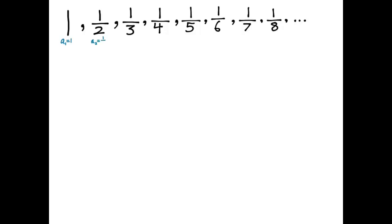And we can name the terms a sub 1, a sub 2, and so on according to the usual convention. And when we do that, it's very easy to make up an expression that describes the general term: a sub n equals 1 over n.